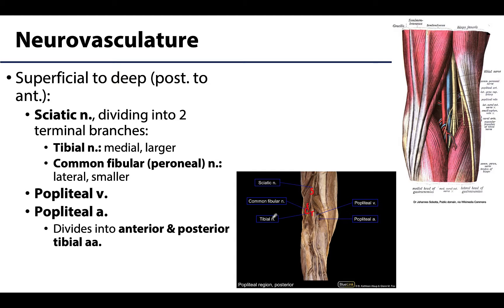Intermediate in depth, but still on the deeper side, is the popliteal vein — you can see the vein here. Deepest of all will be the popliteal artery. When I say deep, I mean deep — it is so deep that it's actually sitting on the surface of the posterior femur, so you have to do quite a bit of dissection and removal of fat to get to it. You can feel a popliteal pulse, but it's difficult due to the depth. Sometimes if you flex the knee and really put your hand in there you can feel it, but again it's a very deep artery.